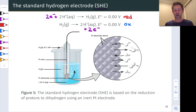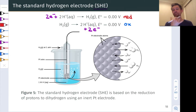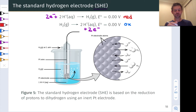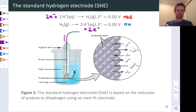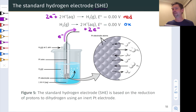And what we do to measure the potential of a cell of interest is hook this in with another half cell and measure the potential of the resulting galvanic cell, treating this as the anode. So we're thinking of the SHE typically — when measuring standard electrode potentials or standard reduction potentials — as the source of electrons, as the anode, such that electrons are flowing out of this wire and into our half cell of interest.